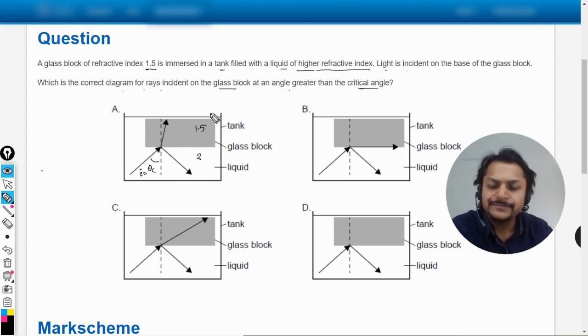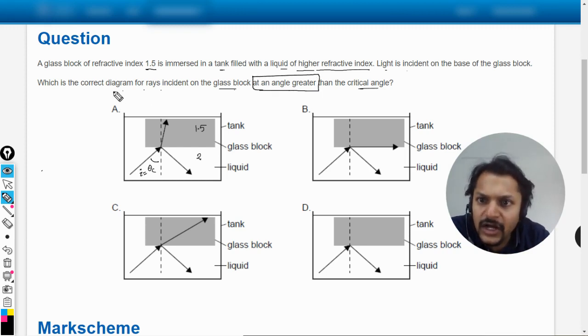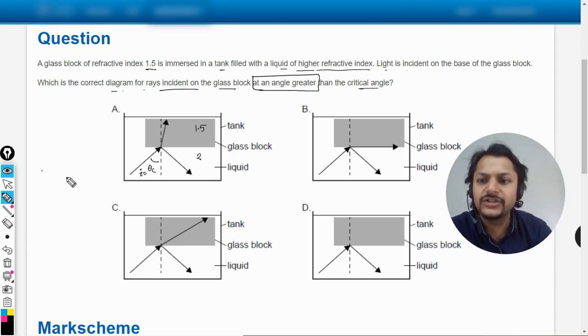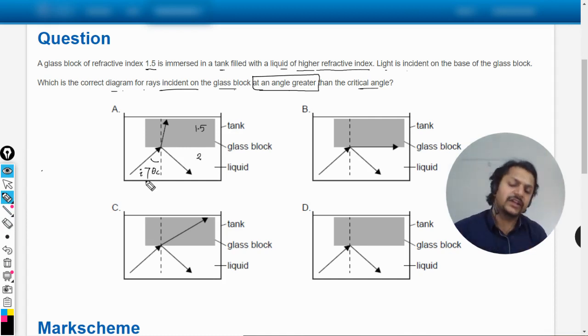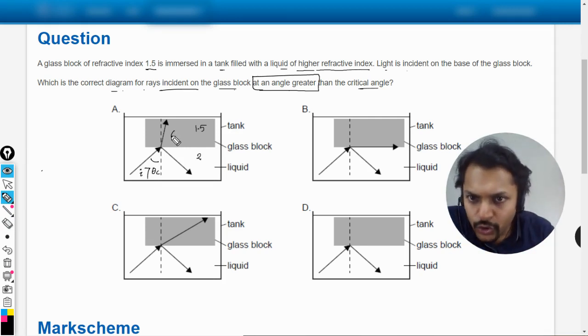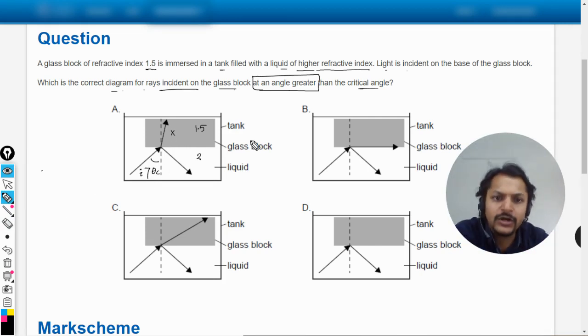It is incident on the glass at an angle greater than theta critical, so only reflection would be taking place. This means no energy is going to enter into the glass block.